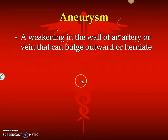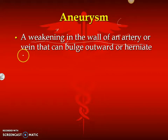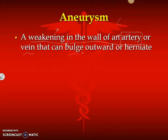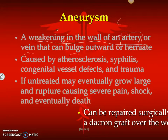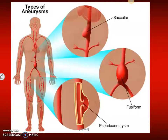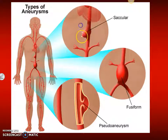An aneurysm right there. So let's write down our key words: it's a weakening in the wall of an artery — you can have them in veins, but they're more common in arteries — causing a bulge. There are different types of aneurysms. Our biggest fear is that this ruptures and then you begin to bleed internally, which can be fatal depending on where the aneurysm is found.